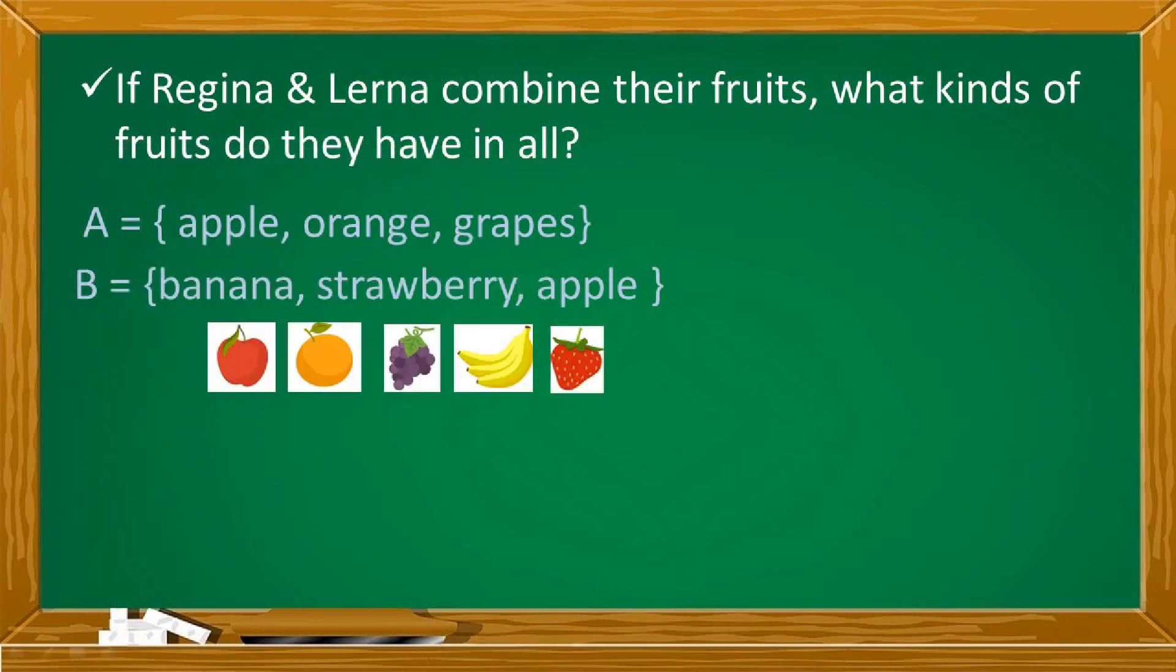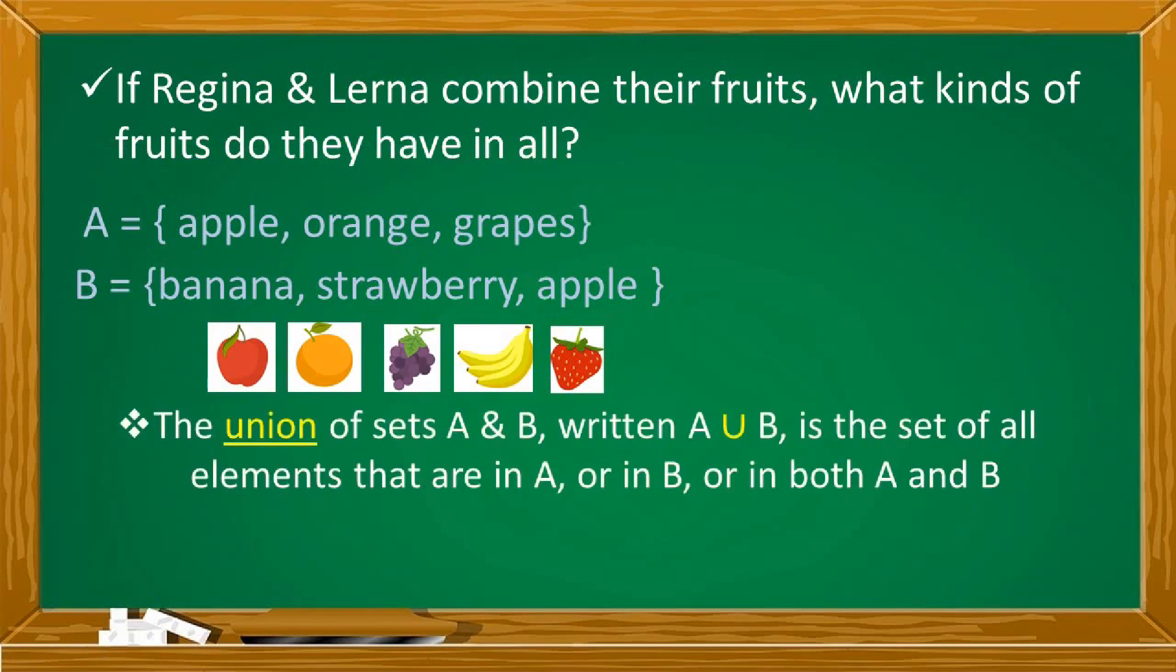So we have the following: apple, orange, grapes, bananas, and strawberry. The union of sets A and B written A union B is the set of all elements that are in A or in B or in both A and B.